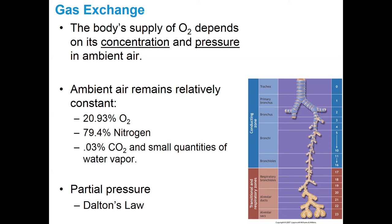By the time oxygen finally makes it down into the alveolus — where it moves from the air into the bloodstream — its partial pressure has dropped to about 100 millimeters of mercury. To summarize: concentration of oxygen in ambient air stays approximately the same, but pressure changes with elevation. Once you breathe the air in, concentration changes further as we add water and carbon dioxide.